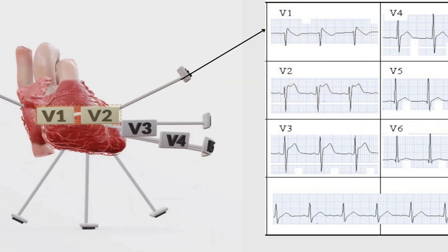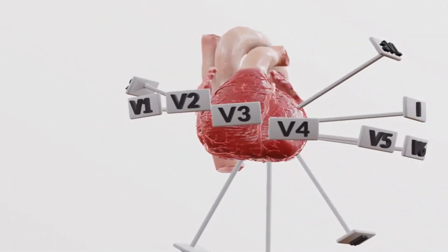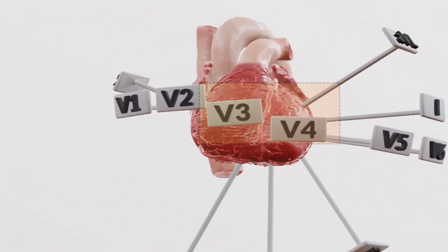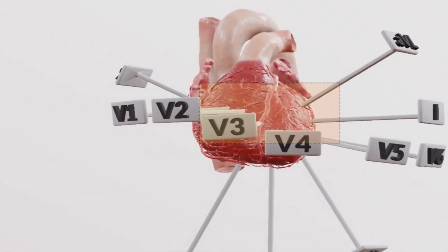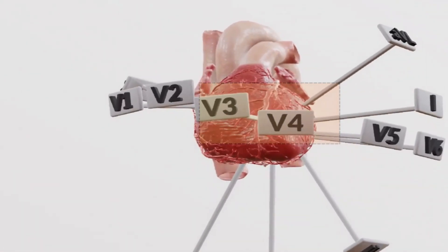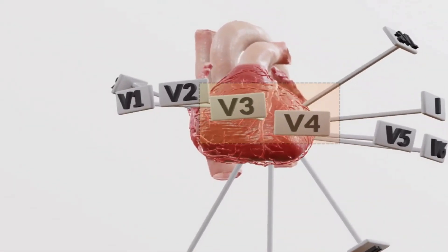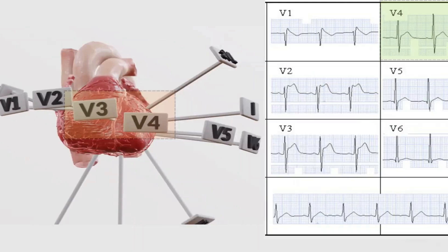Then as we move outwards on your chest, we get to V3 and V4 — your main anterior leads. They're positioned right over the main anterior wall, giving us a direct view of that area. And because they also catch the side part of the front, we often call them anterolateral leads too. So for V3 and V4, think anterior view.